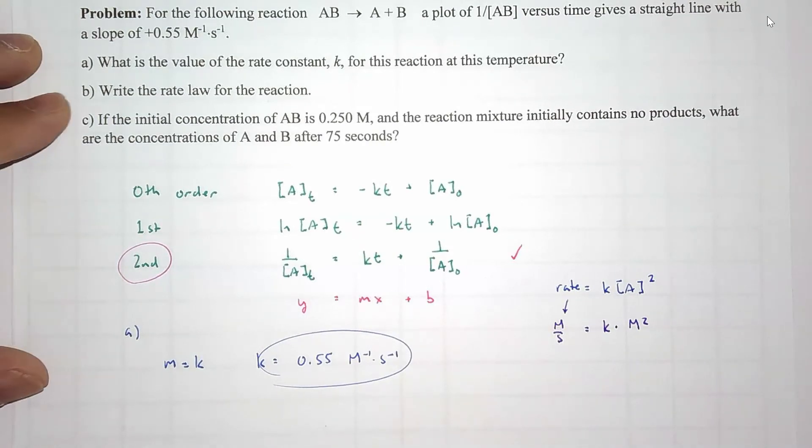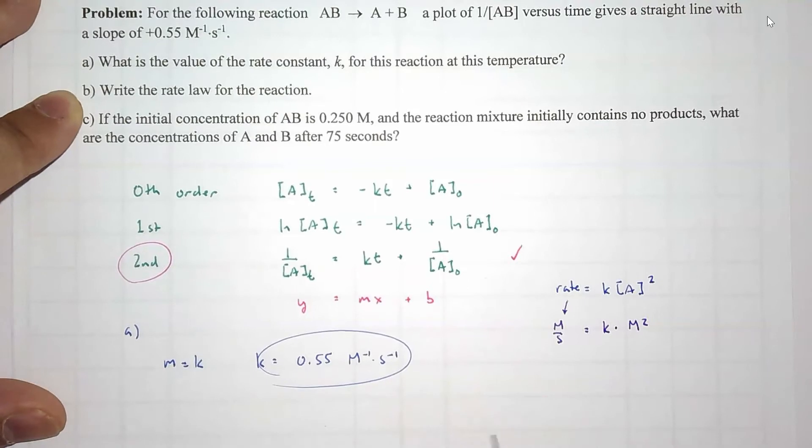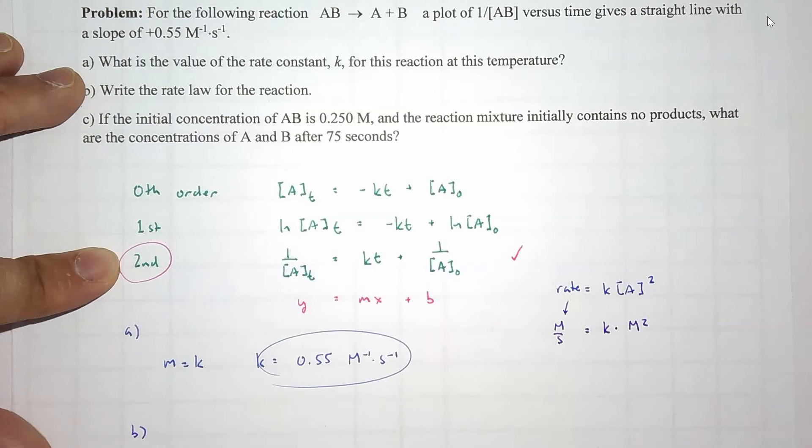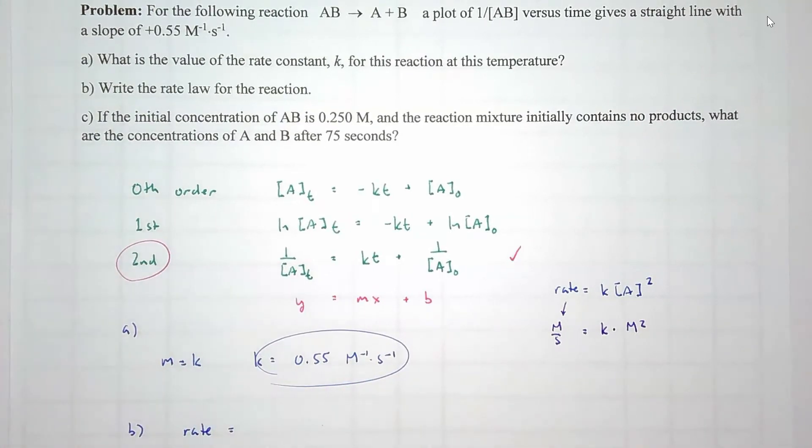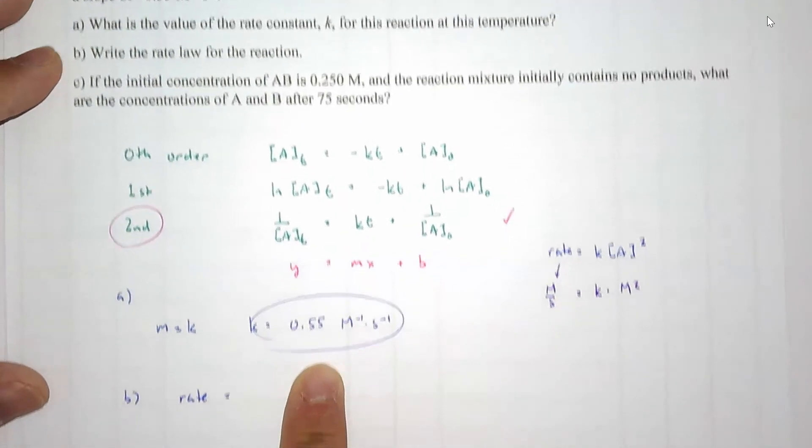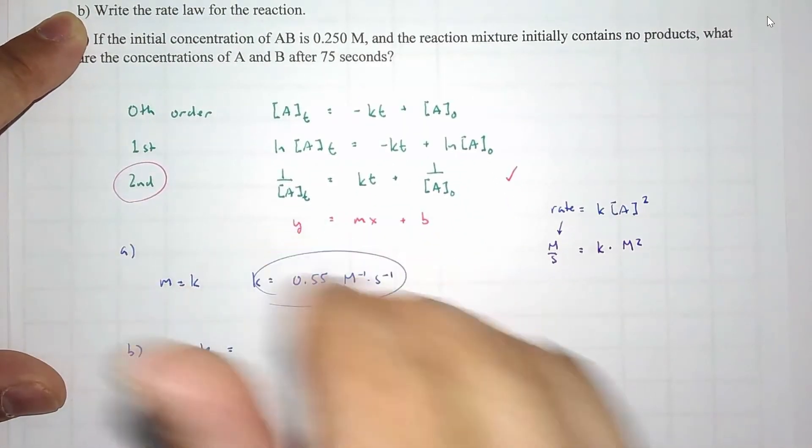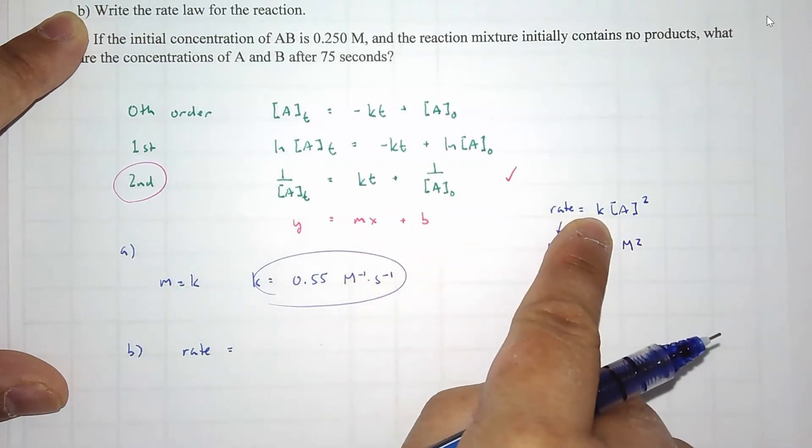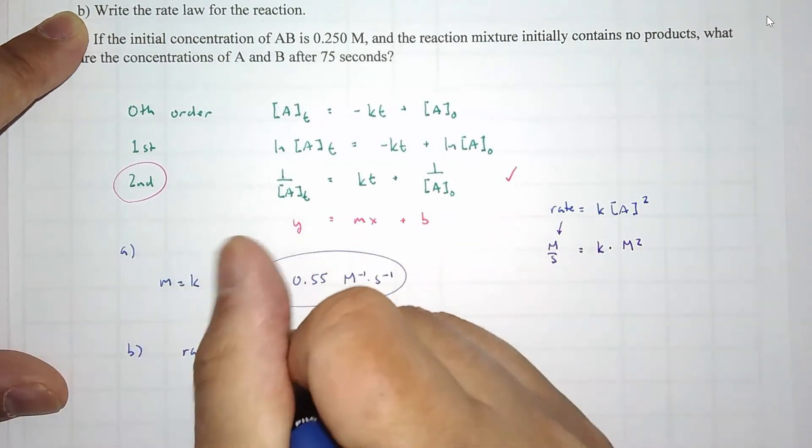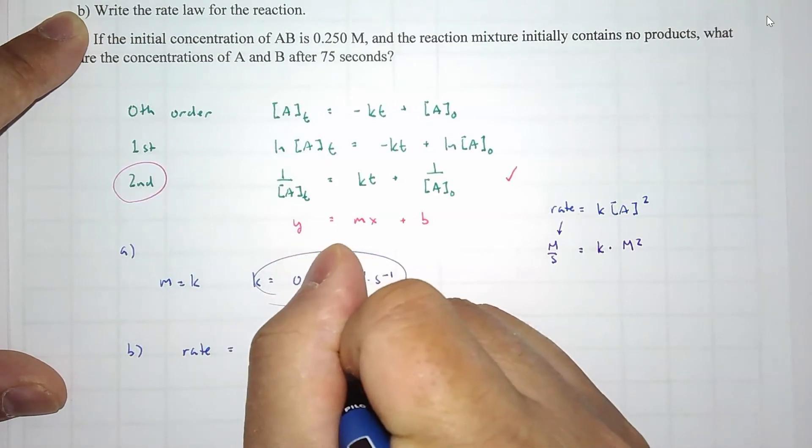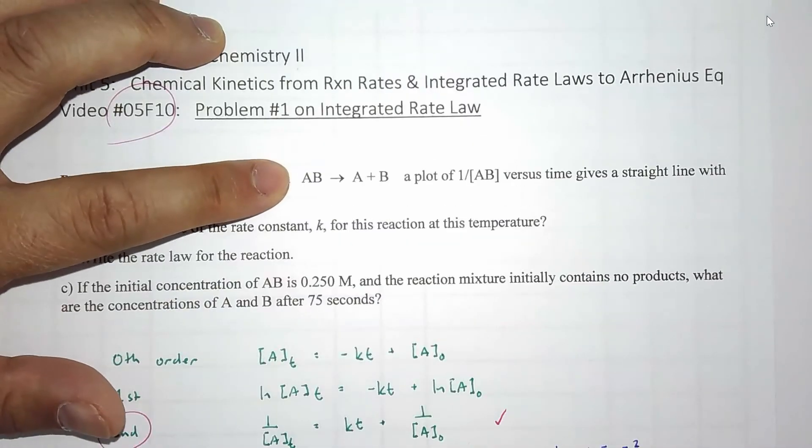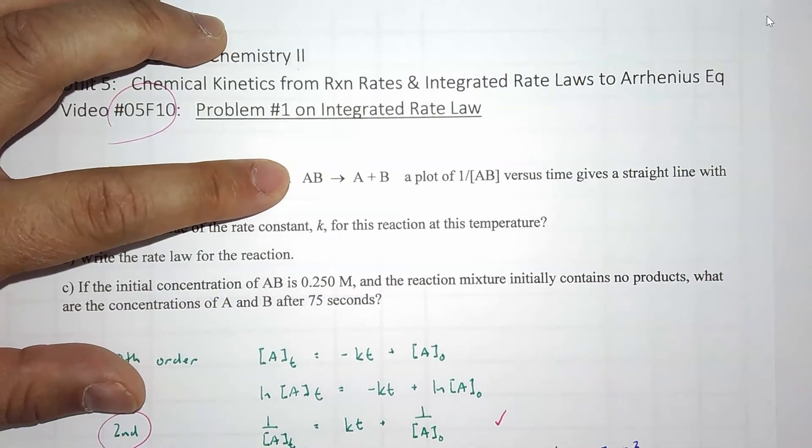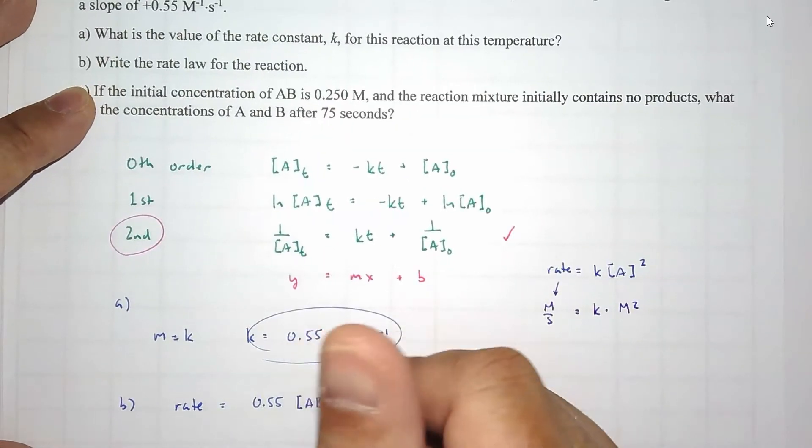Next is write the rate law for the reaction. That one's also easy now because we decided that the reaction is second order. We have rate, and because they had already asked us to calculate k, or to figure out what k is, we could go ahead and input k into the rate law equation. 0.55 times the concentration. Just don't forget they call their starting material AB. So AB squared.